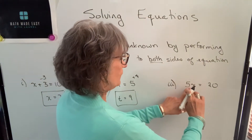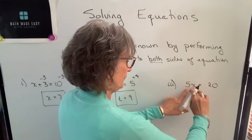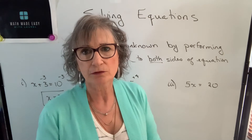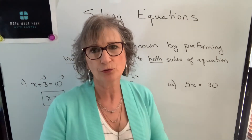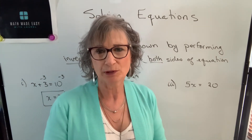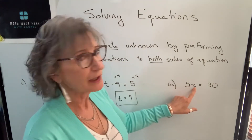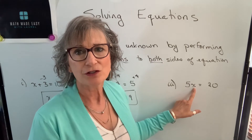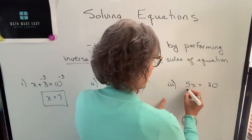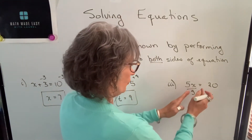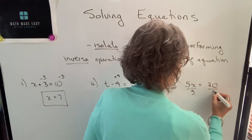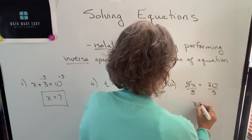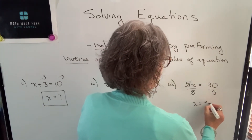If you have a coefficient and a variable, that operation is assumed to be multiplication. When things are written beside each other in a formula, they're being multiplied. So 5 is being multiplied to x, and the inverse operation of multiplication is division. We divide both sides by 5. The 5 cancels, leaving x equals 20 divided by 5, which is 4.